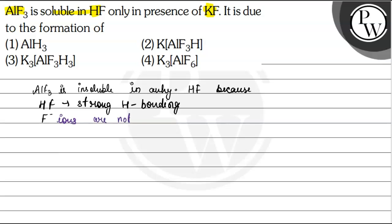That's why we can say that in anhydrous HF, AlF₃ is insoluble. But when we add KF in this solution, there is a soluble substance formed.